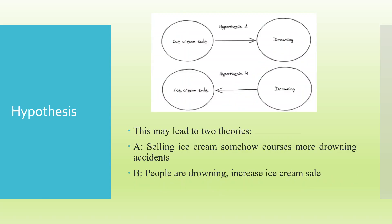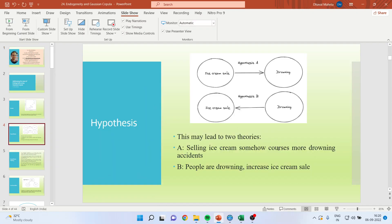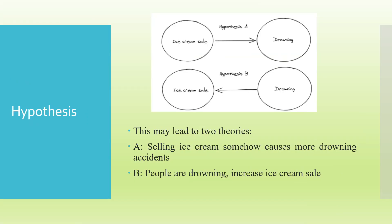How is it possible? Let's try to understand. This may lead to two theories: first, that selling ice cream somehow causes more drowning accidents, and second, that if people drown, then ice cream sales will increase. Both of them are weird theories, but why is it happening?